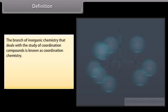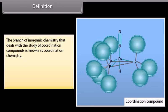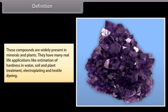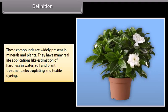The branch of inorganic chemistry that deals with the study of coordination compounds is known as coordination chemistry. A coordination compound contains a central metal atom which is surrounded by a suitable number of neutral molecules, and usually retains its identity in solutions as well as in solid state. These compounds are widely present in minerals and plants, and have many real life applications like estimation of hardness in water, soil and plant treatment, electroplating and textile dyeing.